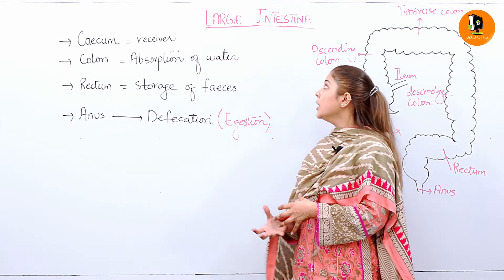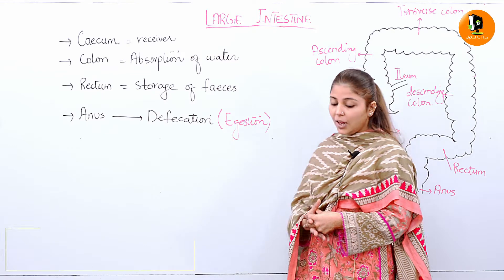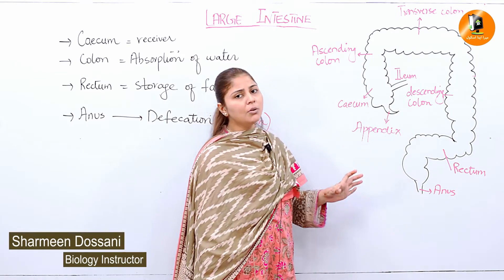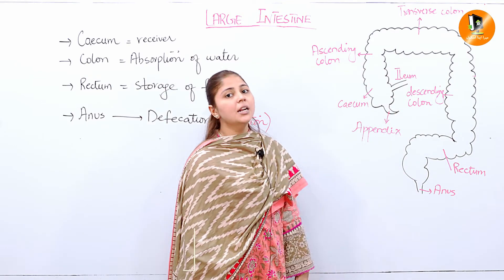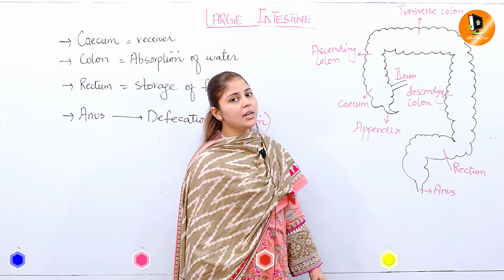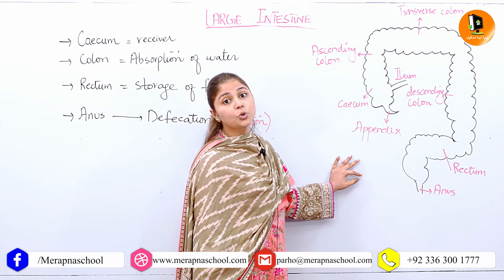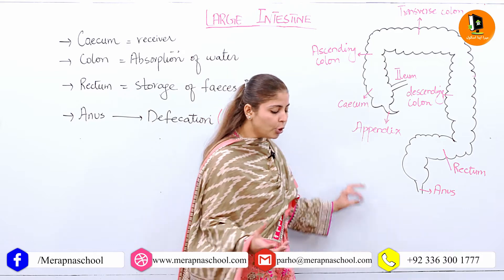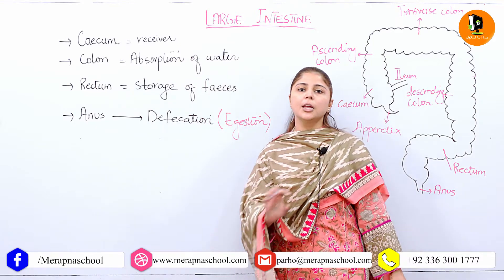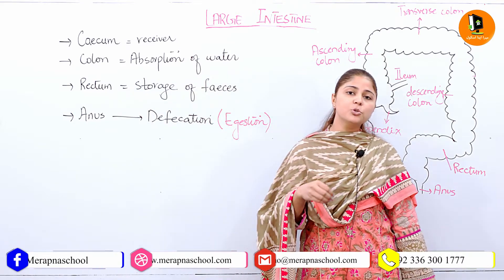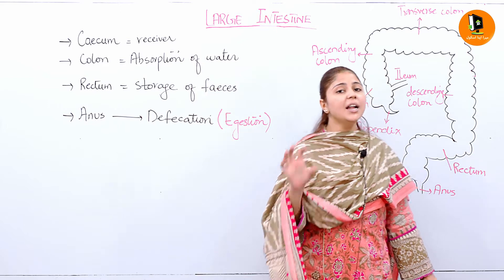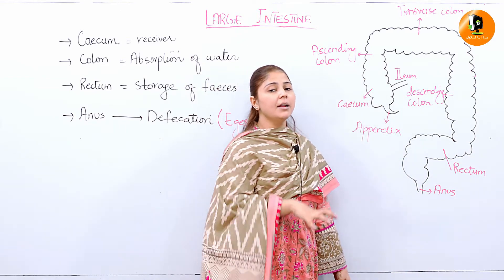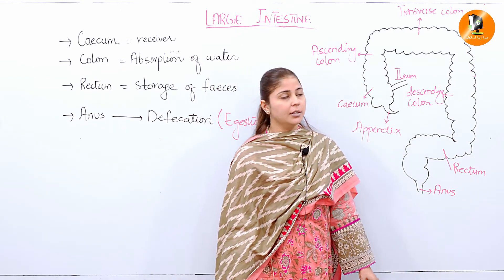Here in the large intestine, let's have a look at this diagram to see clearly which parts make up the large intestine and how it helps to absorb from the undigested food. The digestion is complete and the absorption into blood is also done, but the undigested food will come directly into the large intestine.